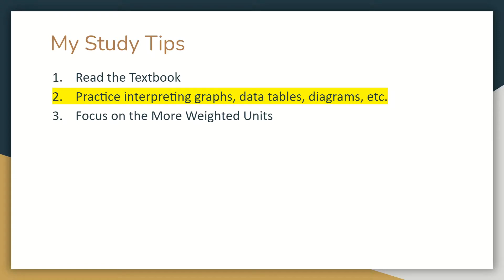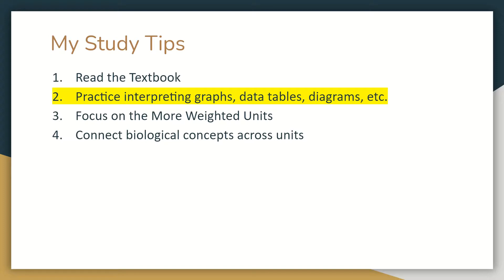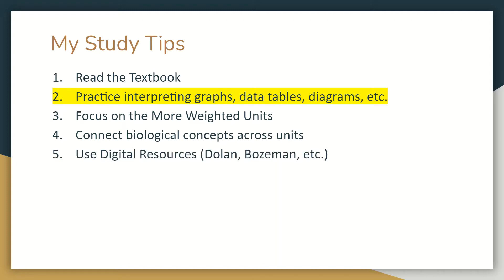Next, you've got to focus on the more weighted units. If you look up the AP Biology course and exam description on College Board's website, it shows how much each unit is weighted on the exam — focus your study time on those higher-weighted units. Additionally, you have to be able to connect biological concepts across units. It can be that difference between a four and a five, so make sure you're able to do it.